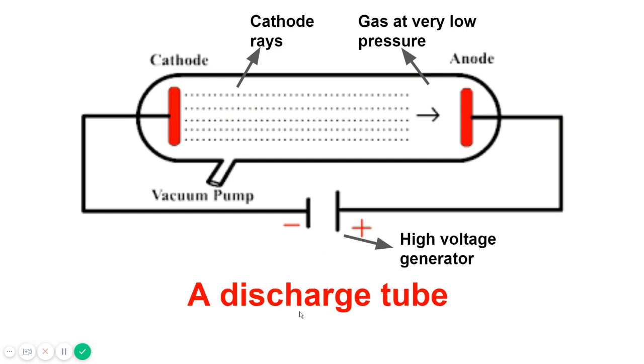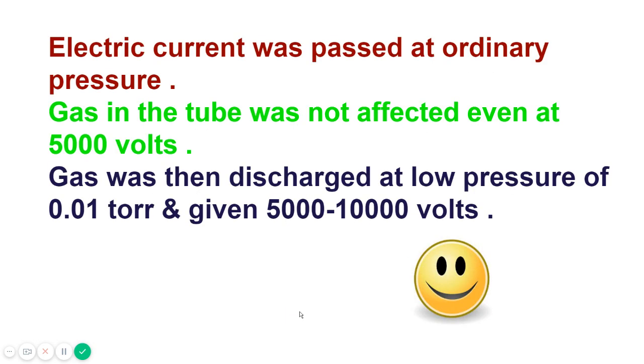Now what happens is, electric current was passed at ordinary pressure gas and the tube was not affected, even at 5,000 volts. Gas was then discharged at low pressure of about 0.01 torr and given 5,000 to 10,000 volts.